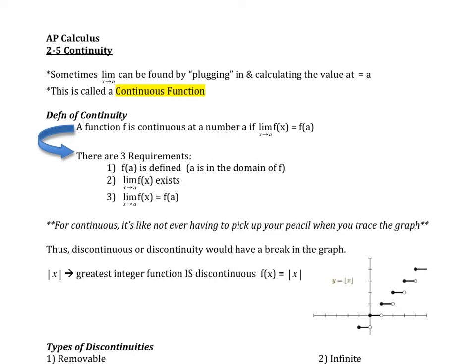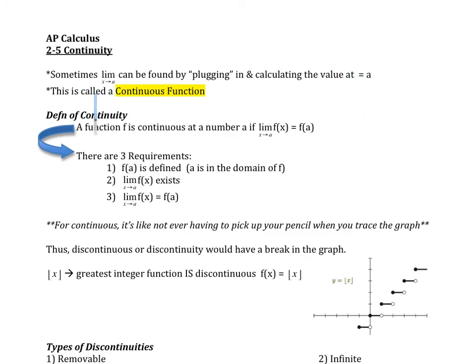So continuity — here's what we're talking about. Sometimes when I take the limit as x approaches a, it can be found by plugging in. We said that's the direct substitution method, and in calculating the value at x equals a. If this happens and you get a value there, we can call this a continuous function.